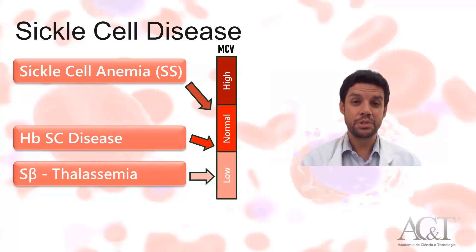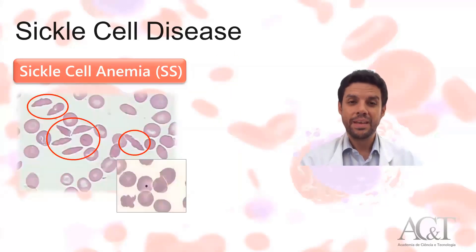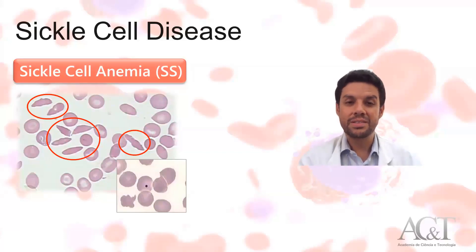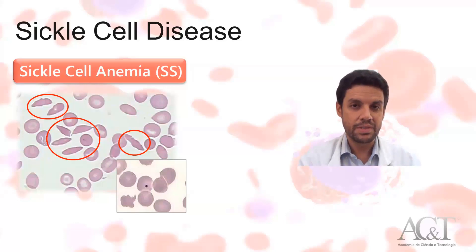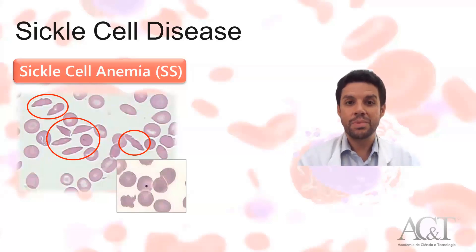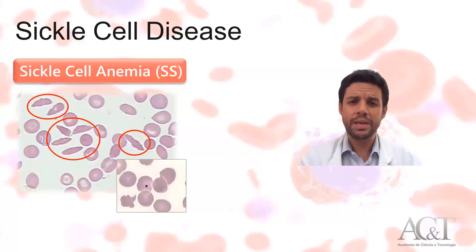And now let's move to morphology. In sickle cell anemia, as expected, we will see a large number of sickle cells, which are elongated and very dense. The amount of cells can vary — for instance, if the patient is presenting a painful crisis you may see a large number of cells, whereas if the patient is being treated with hydroxyurea, this number can be considerably reduced.